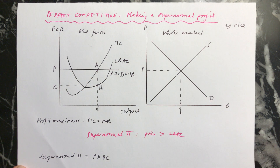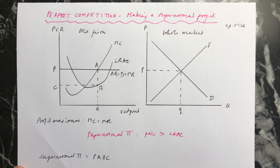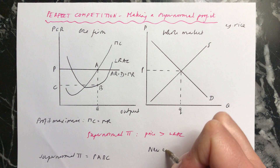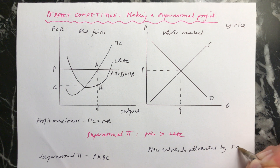Now, if you are in this perfectly competitive market and you're making a supernormal profit, what's going to happen is that people who aren't already in the market are going to see that supernormal profit and think they'd like to make some too. So new entrants will be attracted by the supernormal profits. Remember, the reason they can come into the market is because there are low or no barriers to entry and low or no sunk costs, so it's easy for them to do that.